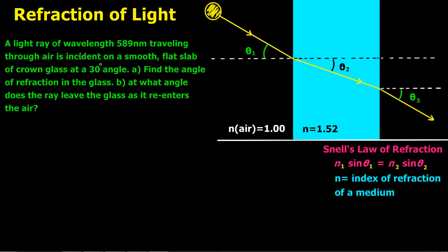Hi guys. Today we're talking about the refraction of light. In this problem, a light ray of wavelength 589 nanometers traveling through air is incident on a smooth flat slab of crown glass at a 30 degree angle. Find the angle of refraction in the glass, and at what angle does the ray leave the glass as it re-enters the air?